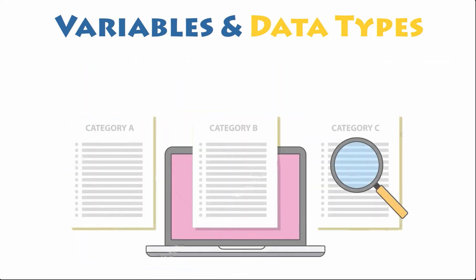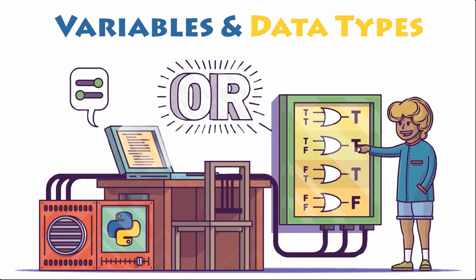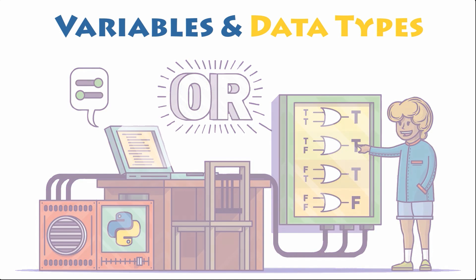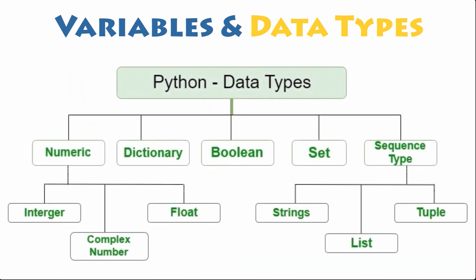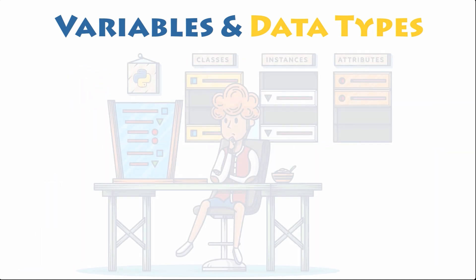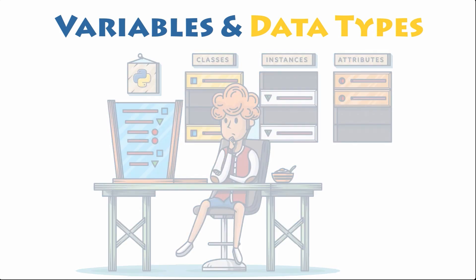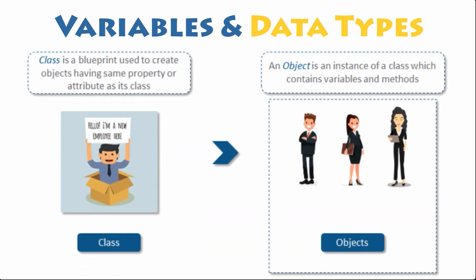Data types are the classification or categorization of data items. They represent the kind of value that tells what operations can be performed on particular data. Every value in Python has a data type. Since everything is an object in Python, data types are actually classes and variables are instances of these classes.